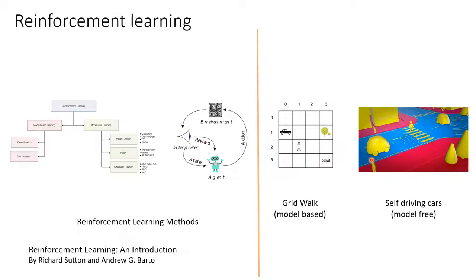In a model-free method, there is no actual model of the environment, but the agent tries to infer by gathering experience trajectories. Depending on the function the agent is trying to learn, model-free methods are broadly divided into value-based, policy-based, or advantage functions. A wide variety of algorithms have been proposed under each category. If you're interested in learning each of these methods, I recommend the book 'Reinforcement Learning: An Introduction.' Our focus for this video is to understand Q-learning, so let's proceed.